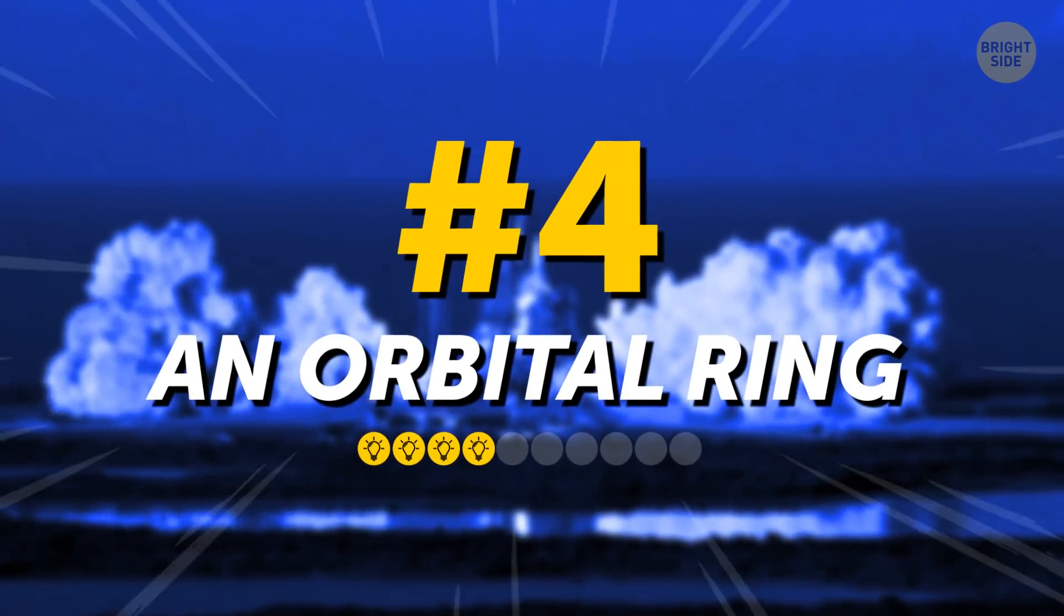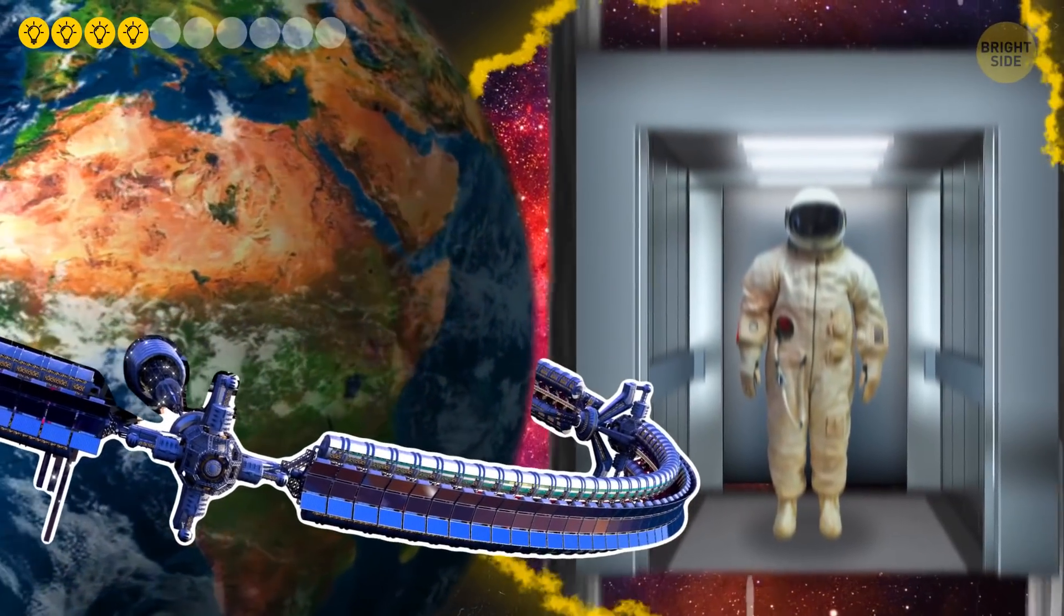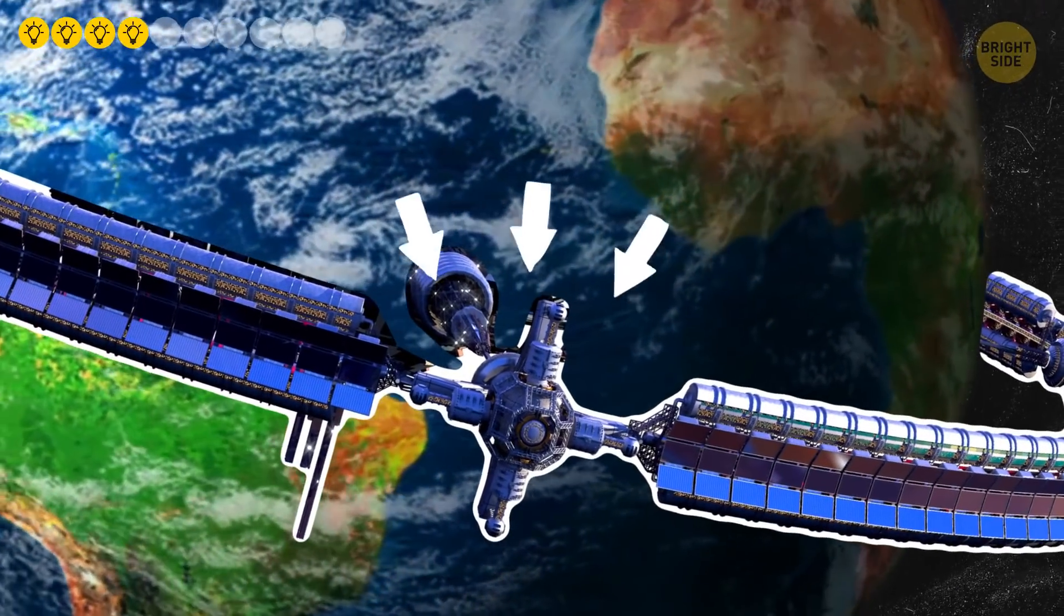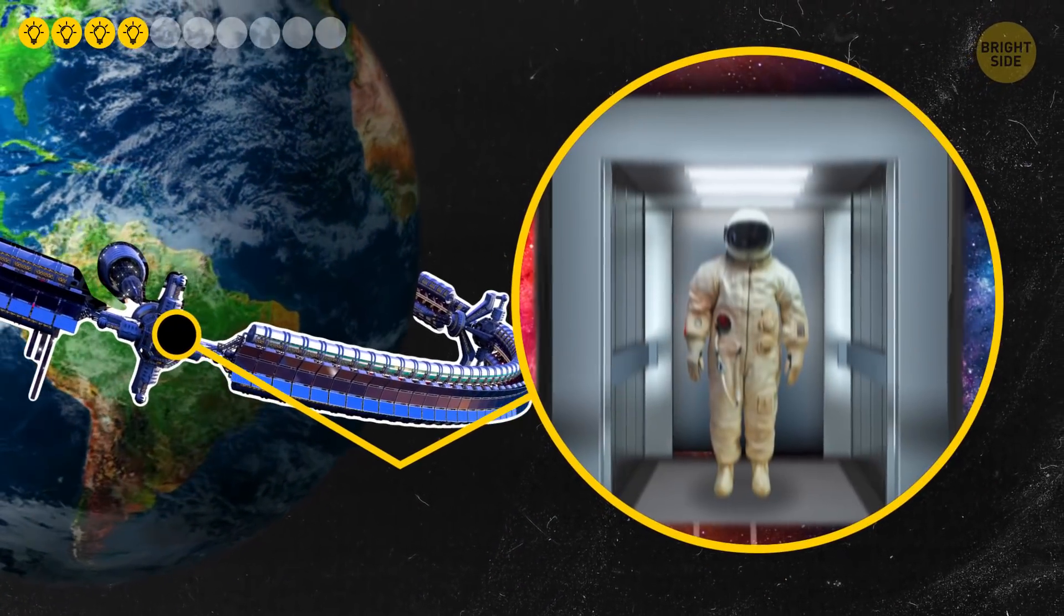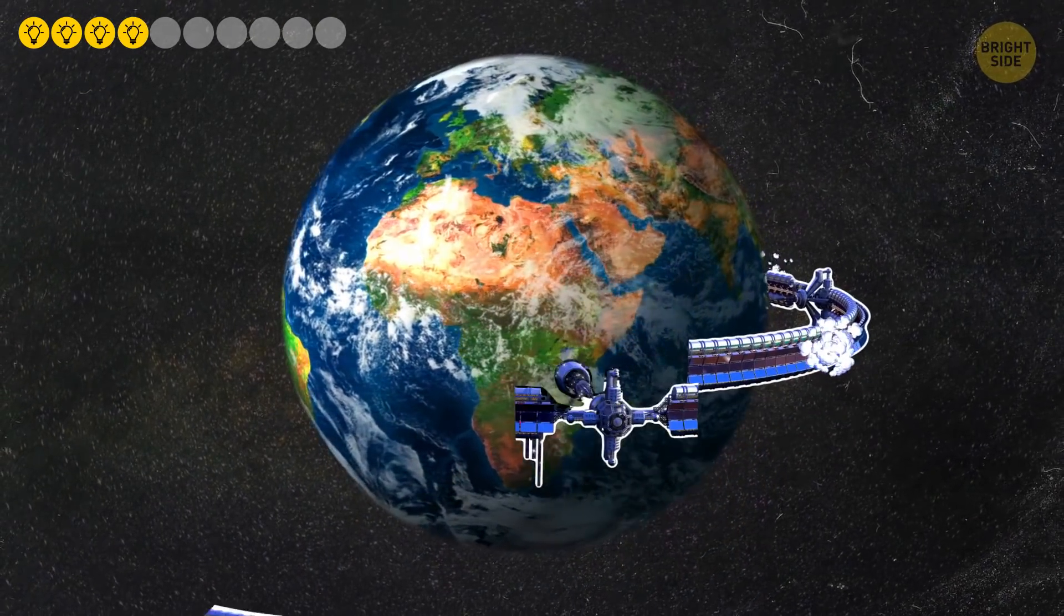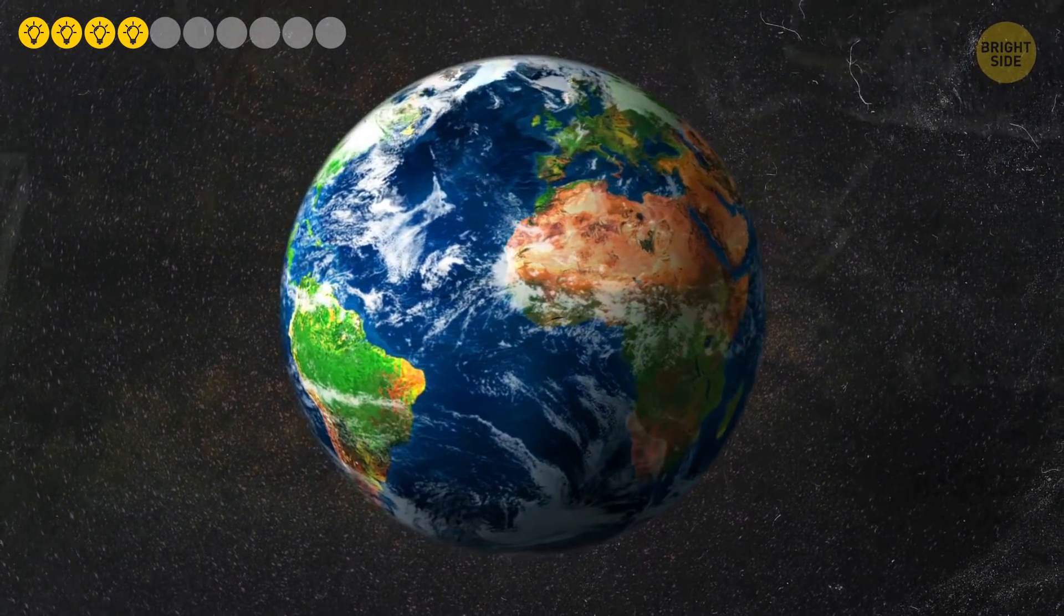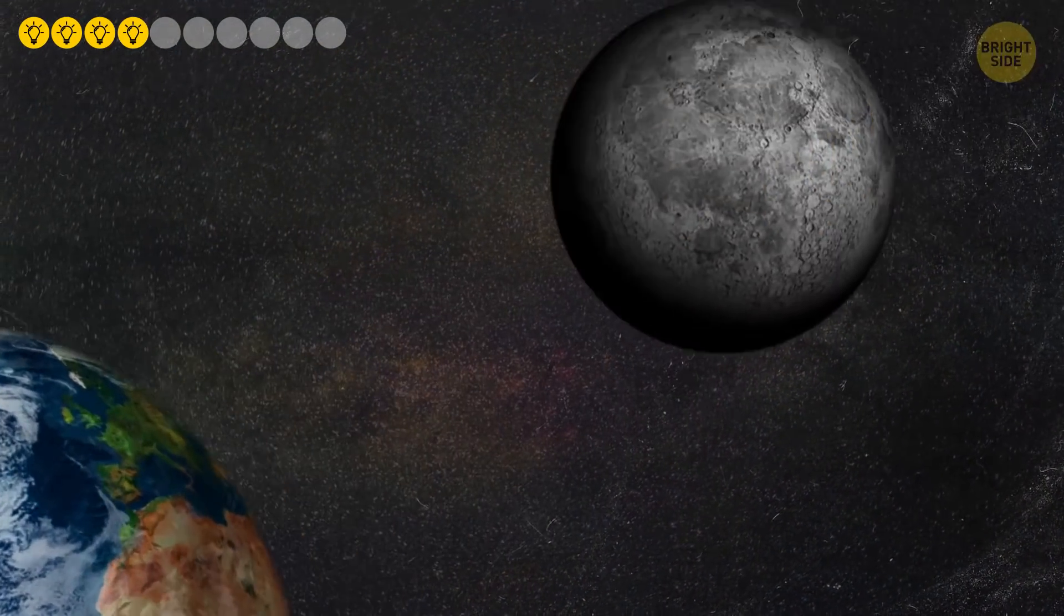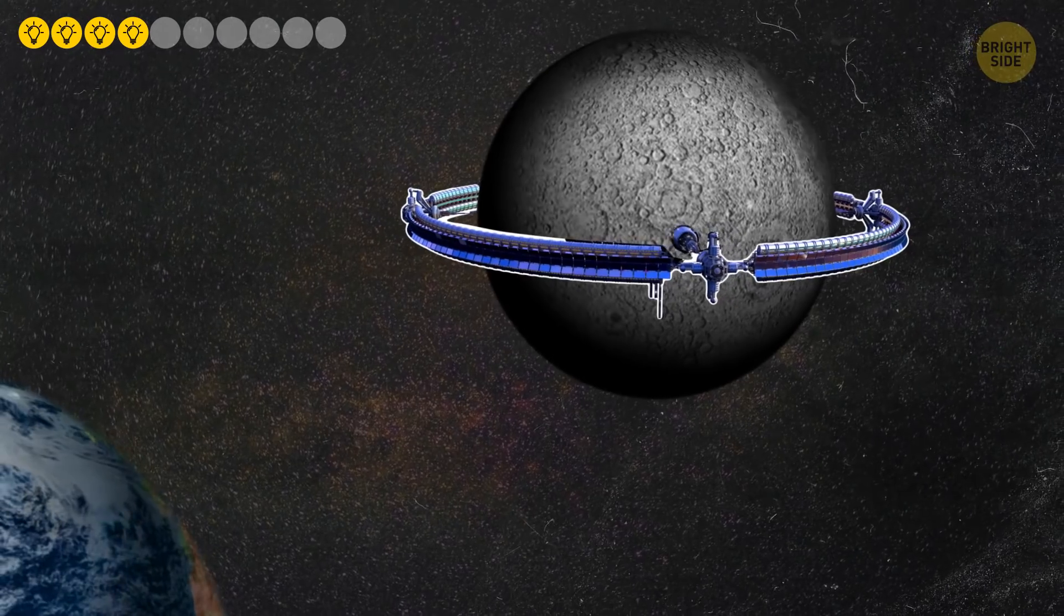An Orbital Ring. The principle of the orbital ring would be similar to that of the space elevator. On the other hand, the gigantic ring would circle the planet with several points connecting it to ground stations on Earth. Inside each ground station, there would be a mega-fast elevator that would allow you to travel to space. The orbital ring could be created right in space with the help of minerals found there. Unfortunately, this project is unlikely to get started in the near future because of its enormous costs. On the other hand, they say that orbital rings could be installed around the Moon and neighboring planets, which would help people to colonize new territories.